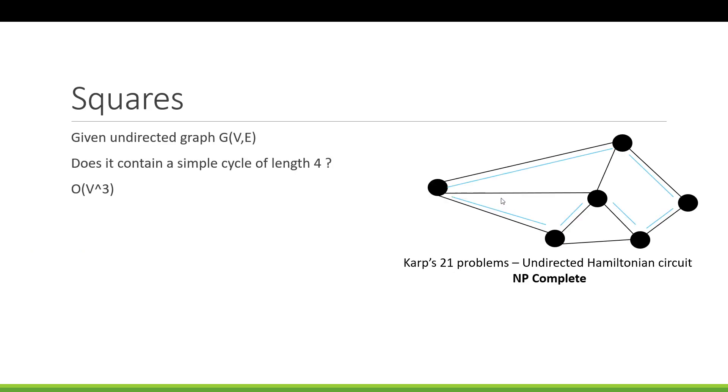And this problem essentially asks us to design and analyze an algorithm that takes an undirected graph G(V,E) and determines whether the graph contains a simple cycle that doesn't intersect itself of length 4. And the running time should be order of V cubed, where V is the number of vertices in the graph.